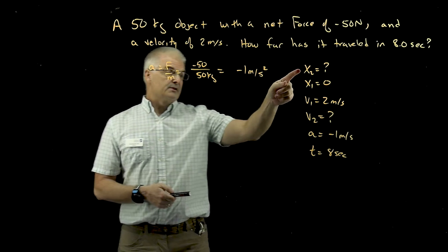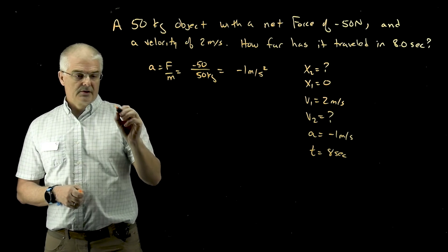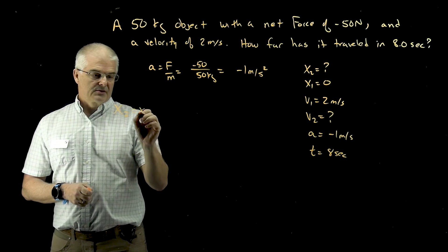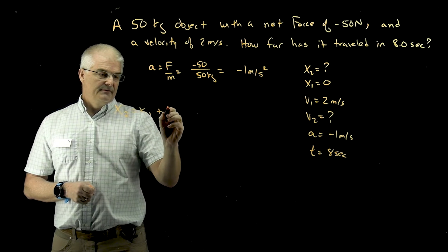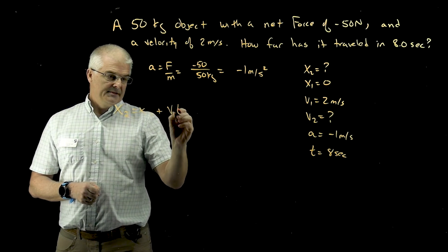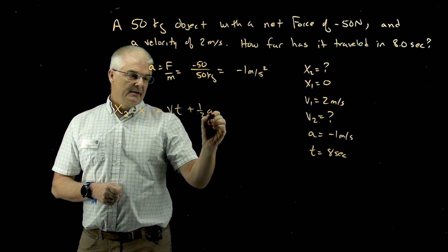Far is X, or essentially X2. So we're going to use the equation, if you recall, X2 is X1 plus V1T plus 1 half AT squared.